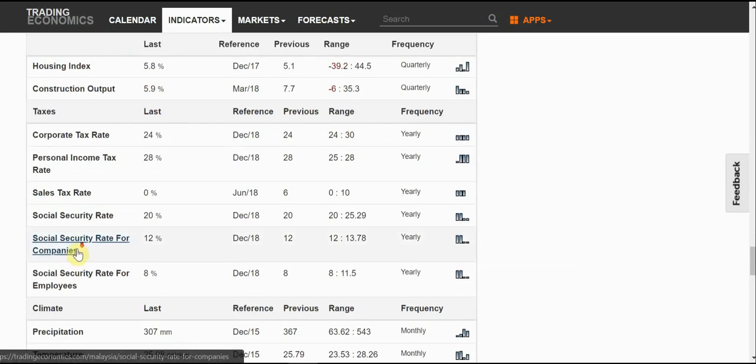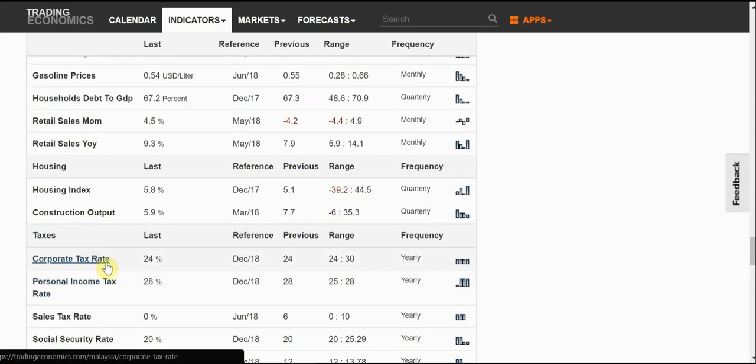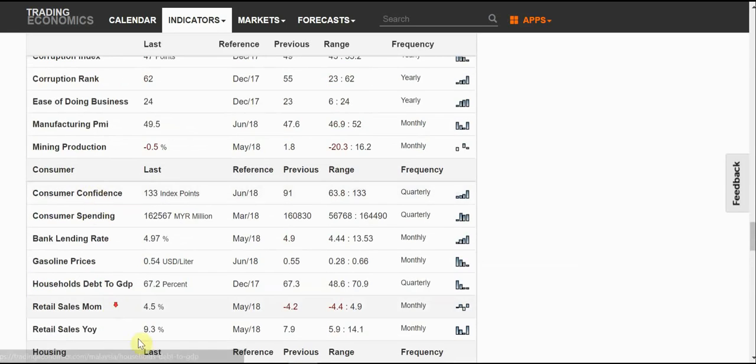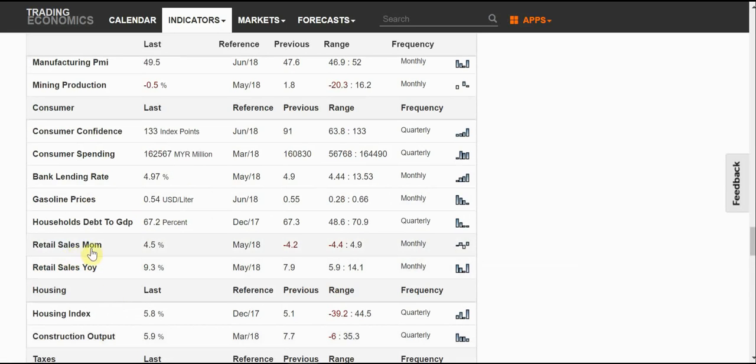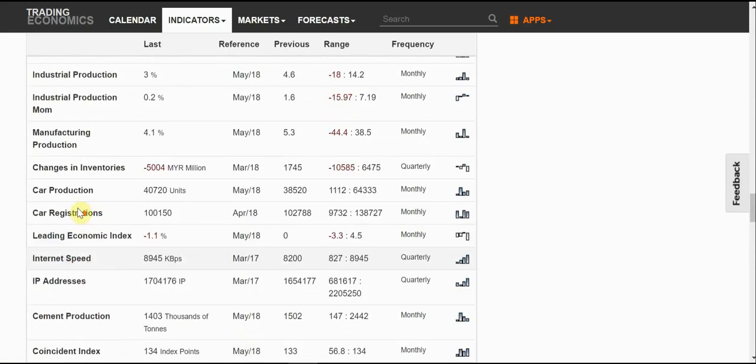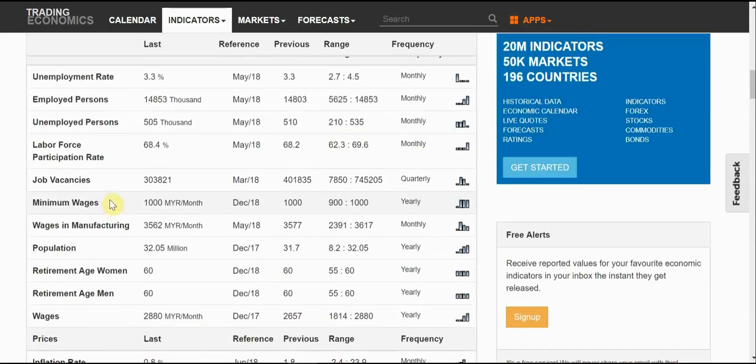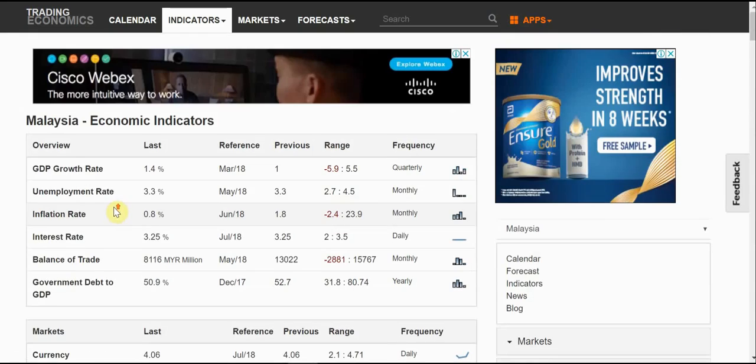So we can see all this list, the list is very extensive. The sales tax rate, and then the corporate tax rate, the taxes. Housing index, retail sales year on year, month on month. Gasoline prices, the bank lending rate, consumer confidence index. All these are very extensive. If you have time, you really have to explore each of these economic data to find out more about a country's financial status.